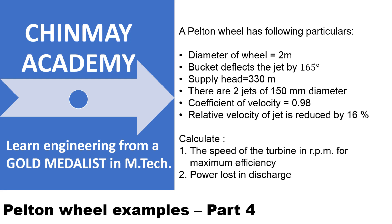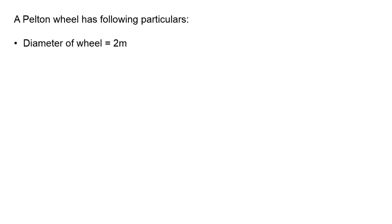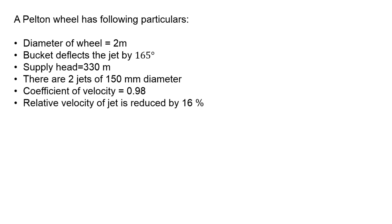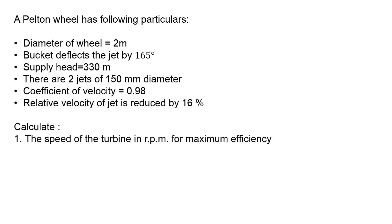In this video we'll try to understand how to solve examples on a Pelton wheel. A Pelton wheel has the following particulars: diameter of the wheel is 2 meters, bucket deflects the jet by 165 degrees so phi will be equal to 180 minus 165, that is 15 degrees. Supply head or net head is 330 meters. There are two jets of 150 mm diameter. Coefficient of velocity is 0.98. Relative velocity of the jet is reduced by 16 percent, so vr1 is equal to 0.84 times vr.